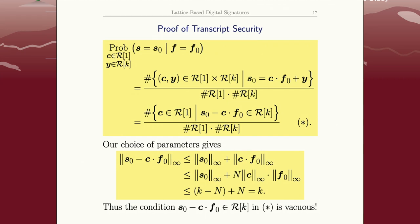But that means this difference is in this box of size K. In other words, this condition here, that S naught minus C F naught be in the box of size K, is vacuous. It's always true. It doesn't matter which C you take.